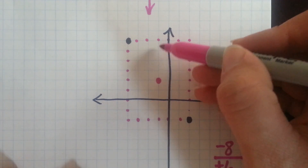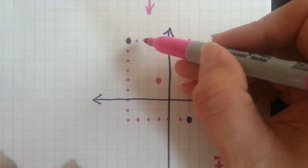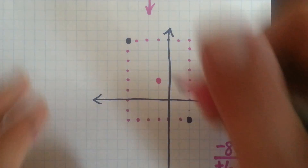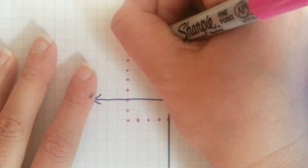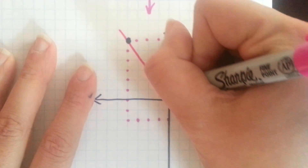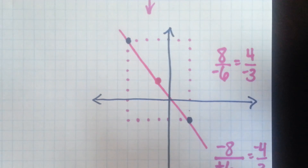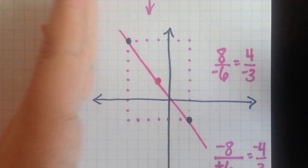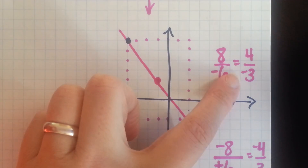Up four and to the left three — back on my line. If I had the line drawn in there, it is a negative slope. It's going down from left to right, so it makes sense.